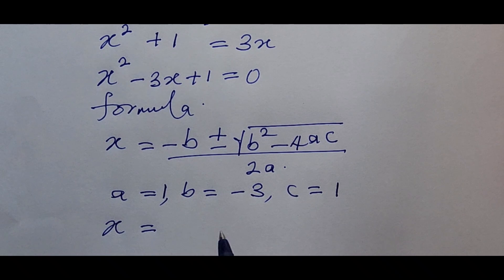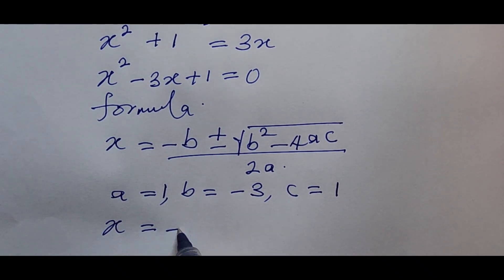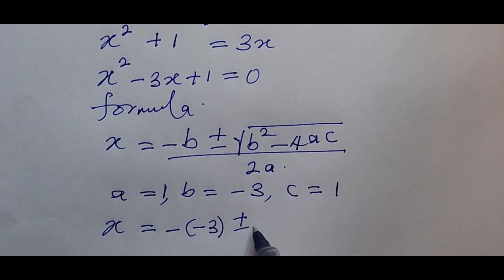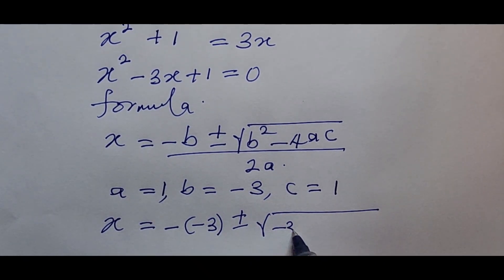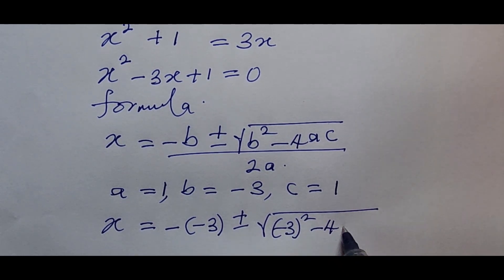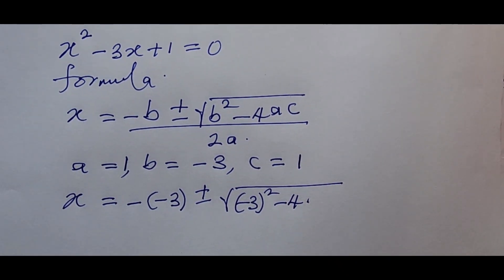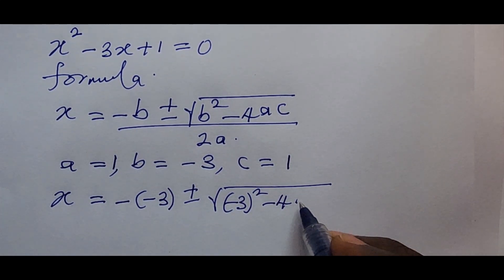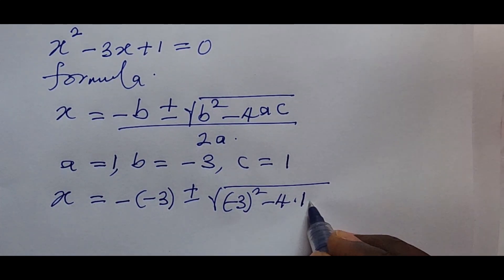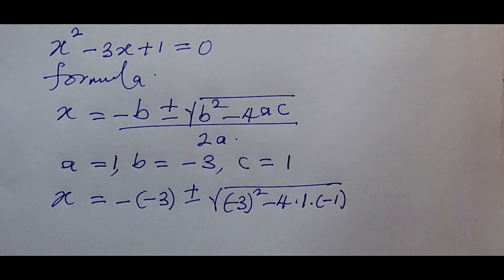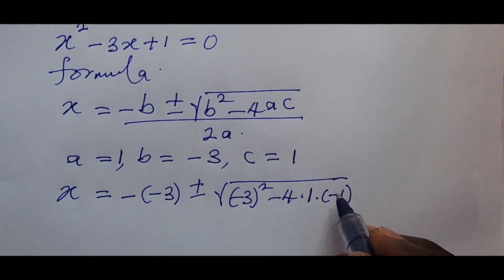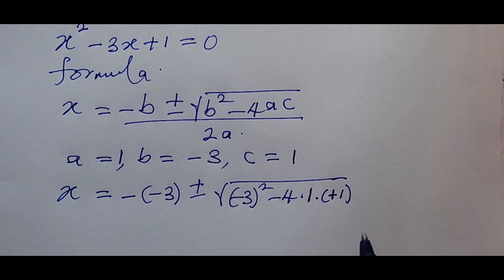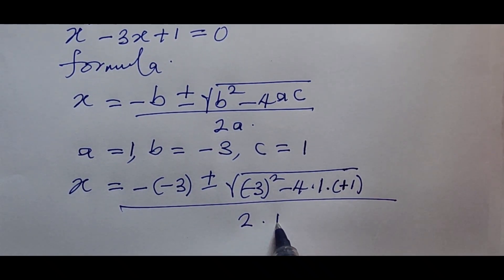Let's put these values into the equation. This gives us x equals negative bracket minus three, plus or minus the square root of minus three squared, then minus four times one times one, all over two times one. I'm using a dot as a symbol for multiplication.